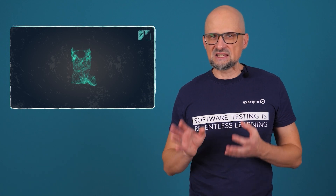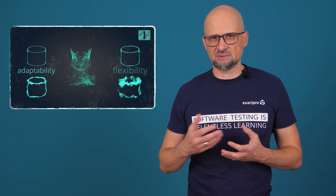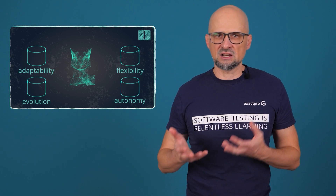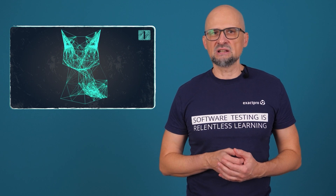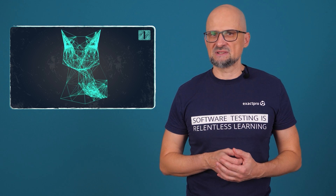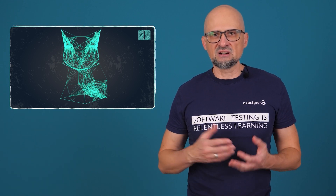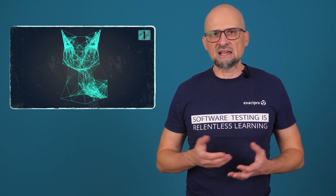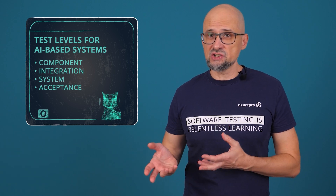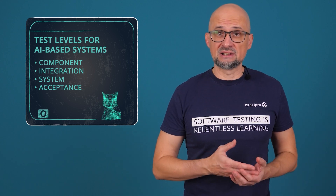Quality characteristics specific to AI-based systems, such as adaptability, flexibility, evolution, and autonomy need to be included in requirement specifications. But since these characteristics are relatively new, this can make it difficult to define and test them. AI-based systems usually have AI and non-AI components. While we test non-AI components using conventional approaches, AI components may require something different.